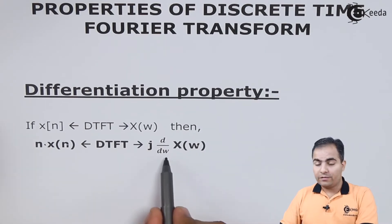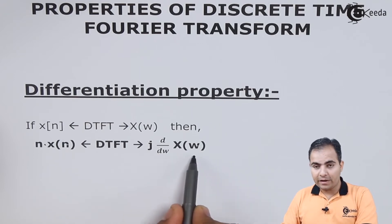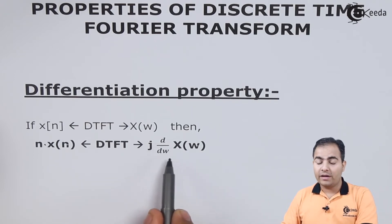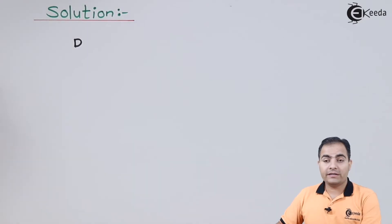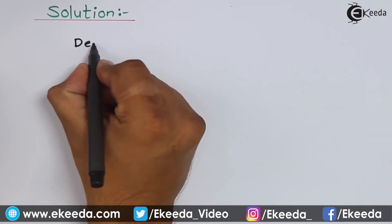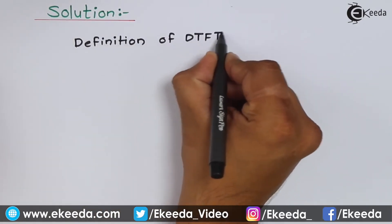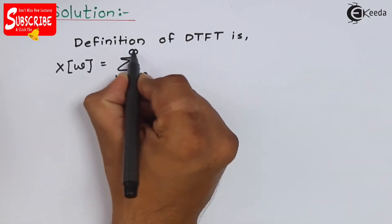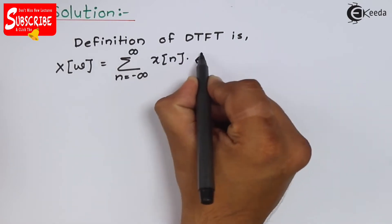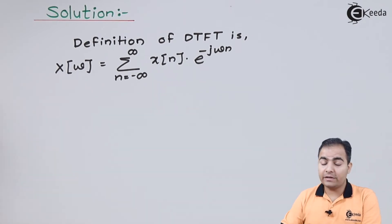Let's see how to prove this. From the equation, we are going to differentiate X of omega with respect to omega, where X of omega is defined by the DTFT definition. So we write the definition of the discrete time Fourier transform and differentiate both sides with respect to omega.